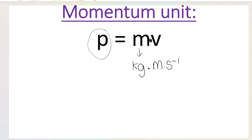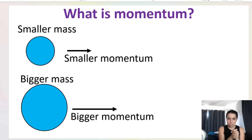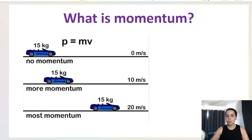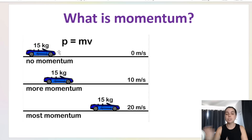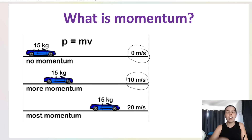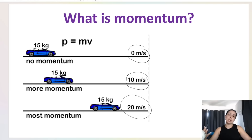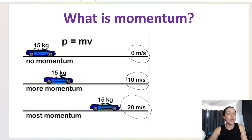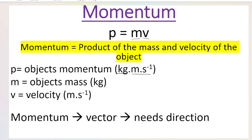Momentum is represented by the symbol p. If you have a smaller mass, you have a smaller momentum; if you have a bigger mass, you have a bigger momentum. Here's a scenario: a 15-kilogram toy car standing still has zero meters per second velocity — no speed, no momentum. If it's moving at 10 meters per second to the right, higher velocity means higher momentum. At its maximum speed of 20 meters per second to the right, it has the most momentum. And importantly, momentum is a vector — it's a product of mass and velocity, and since velocity is a vector, momentum is a vector too.